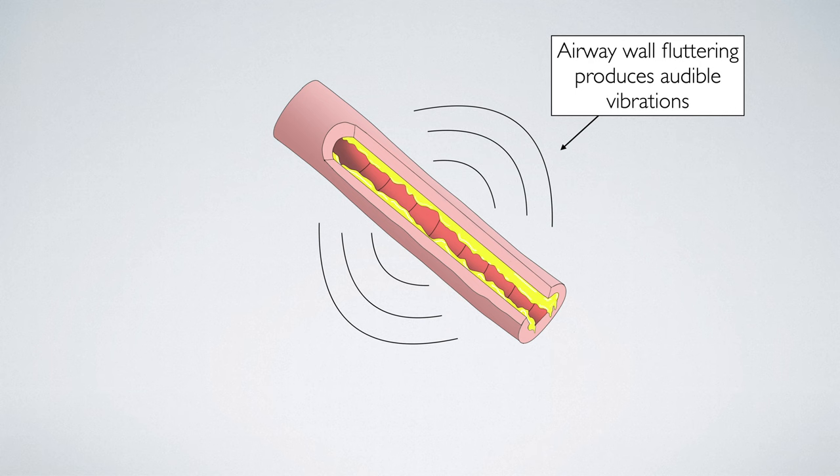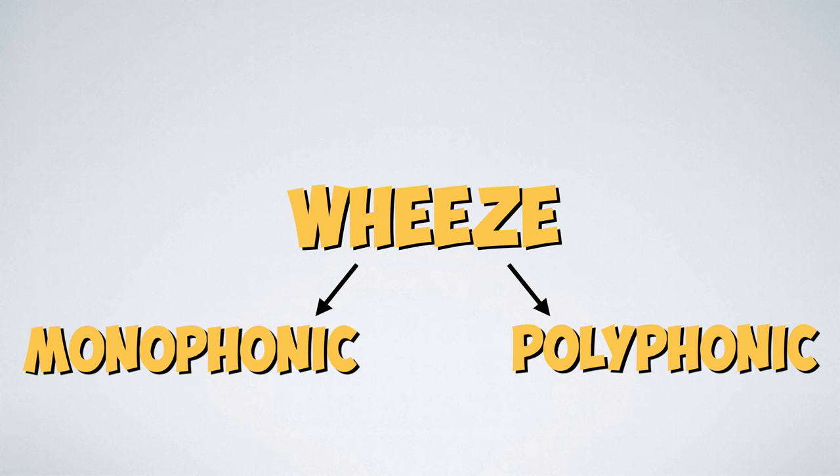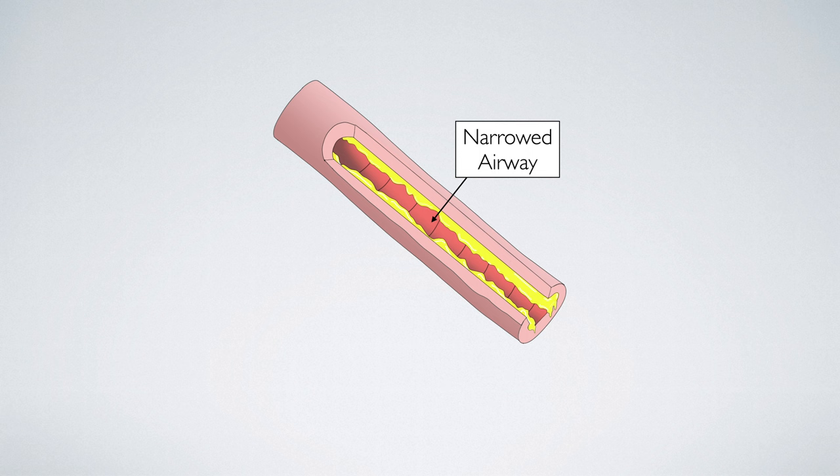Wheeze can be divided into monophonic and polyphonic. A monophonic wheeze indicates that a single airway is narrowed, and when air passes through it, this produces a single, high-pitched, continuous sound.